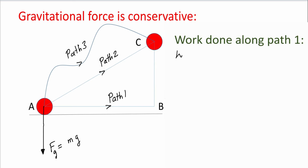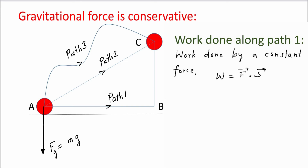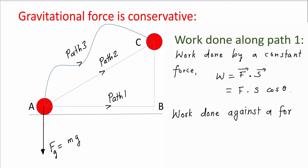We know that work done by a constant force is the dot product of the force and displacement. The dot product is the magnitude of the first vector times the magnitude of the second vector multiplied by cosine of the angle between the two. Work done against the force, W prime, is simply the negative of work done by the force: W prime = −F · S · cosθ.